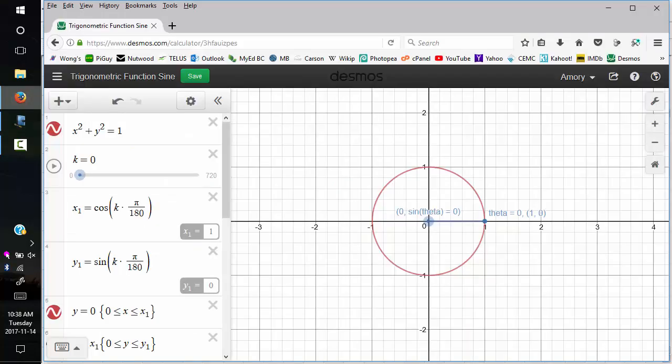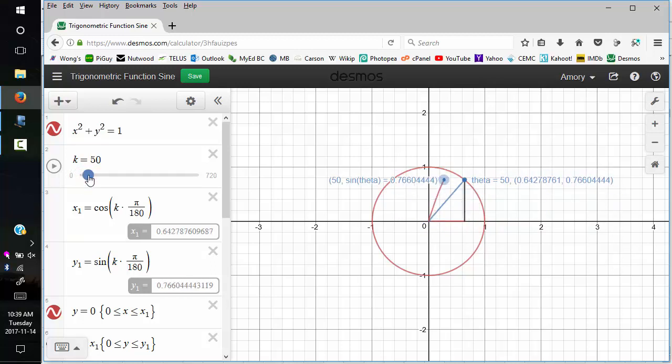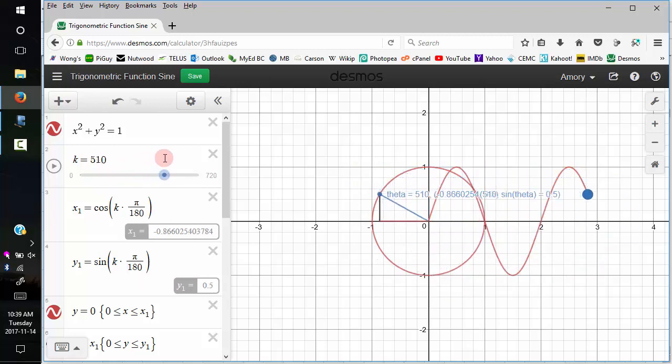If you have a little bit of trouble understanding what's going on here, you can look at this Desmos graph on my website. We have 0 degrees. We have a unit circle. 0 starts on the positive x-axis, and as we increase, we're going around the circle.